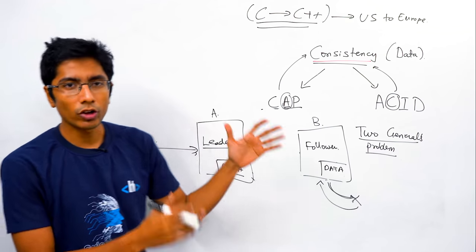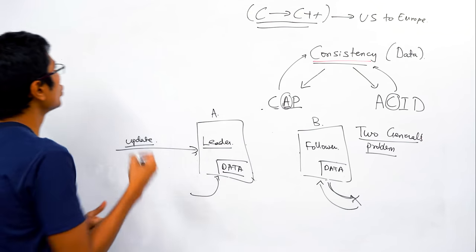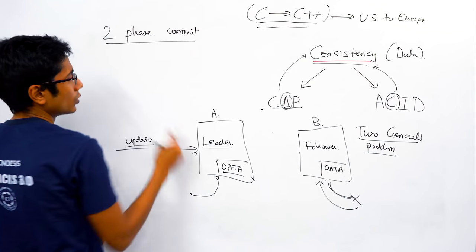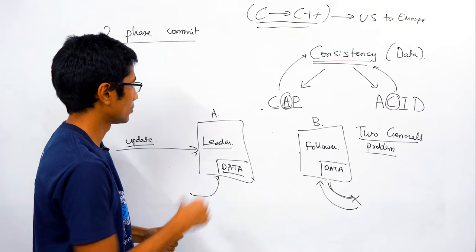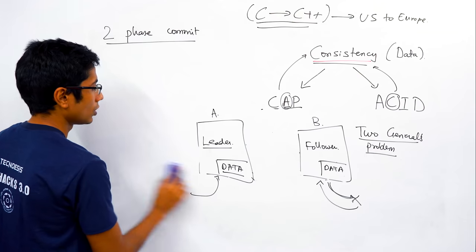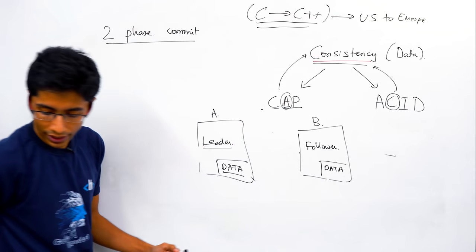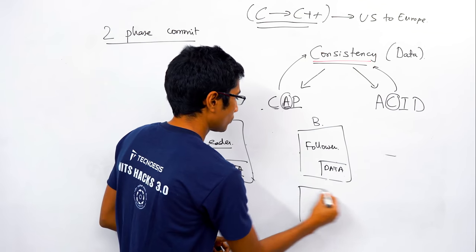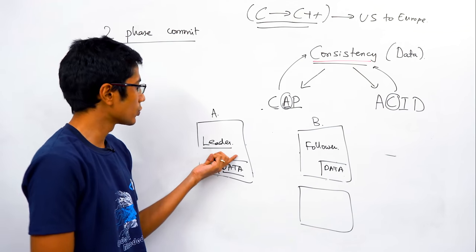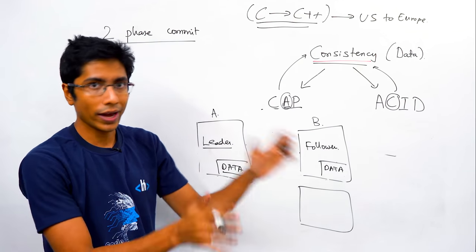Let me expand with one final example: the two-phase commit protocol, or 2PC. It's similar to what we saw with acknowledgements, but the idea is that you have a leader and multiple followers — B, C, D, E, many of them. You can imagine these followers as services: a profile service asking a session service and a document service to wait.